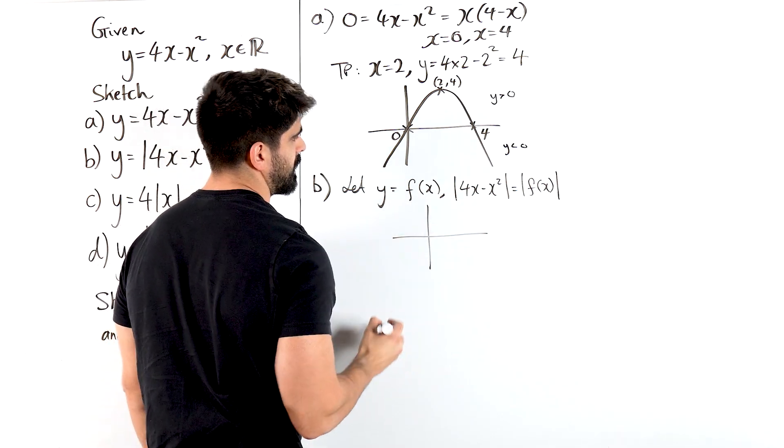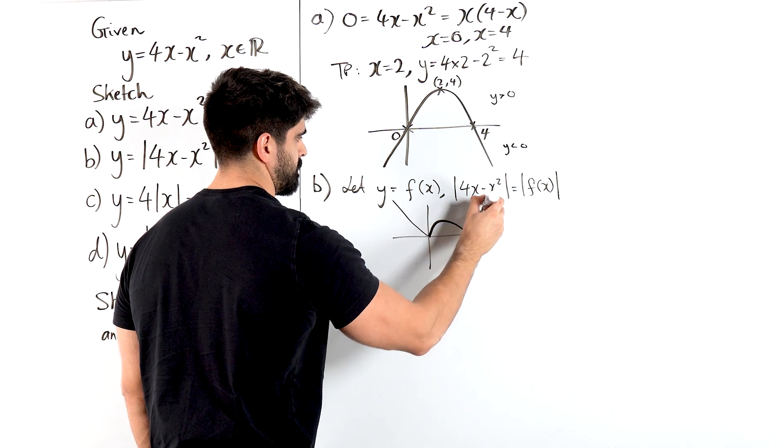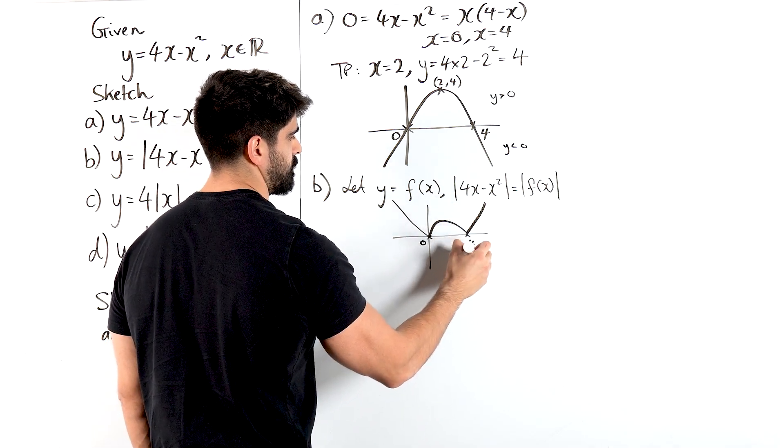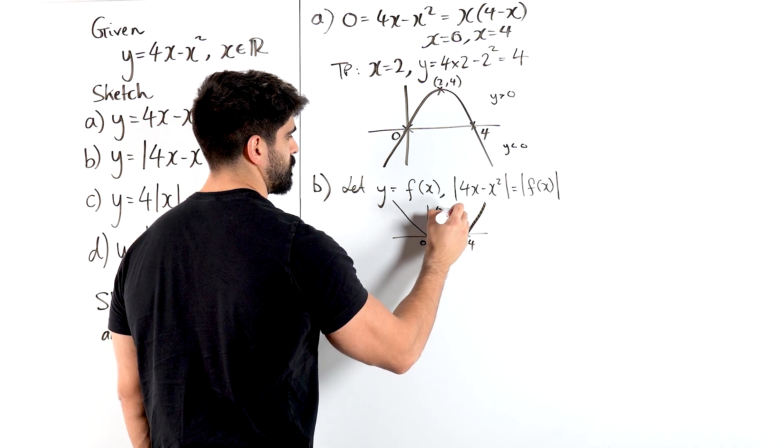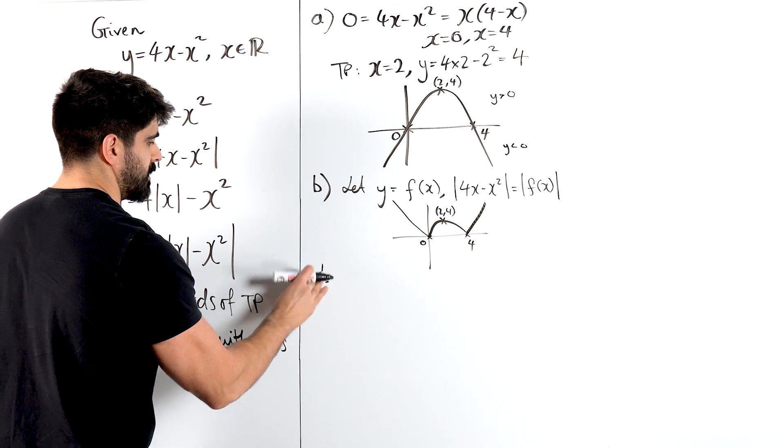So I don't need to do it that large. It's going to look like this. So this is still 0, this is still 4, and this is still 2, 4. What about part C?